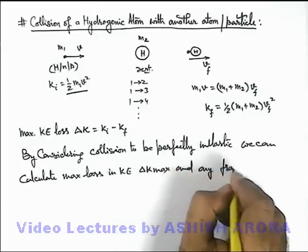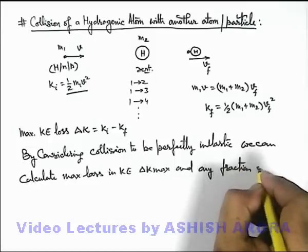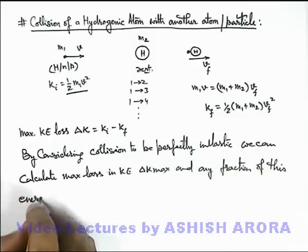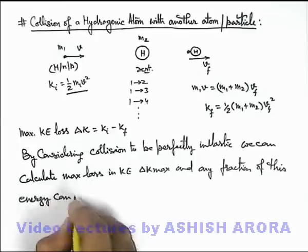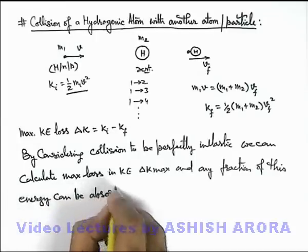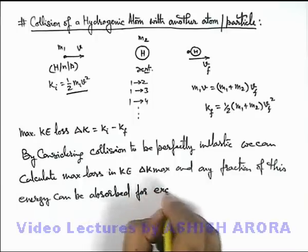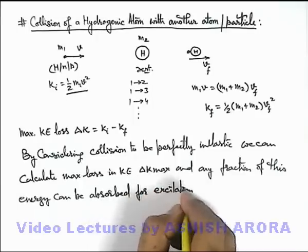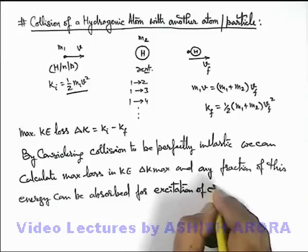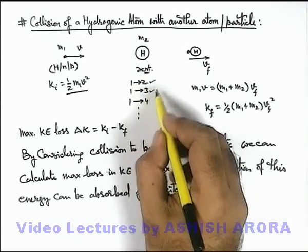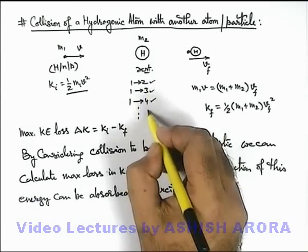And any fraction of this energy can be absorbed for excitation of electron. So here we can say, in a particular situation, excitation energy is known for 1 to 2, 1 to 3, 1 to 4, and so on.